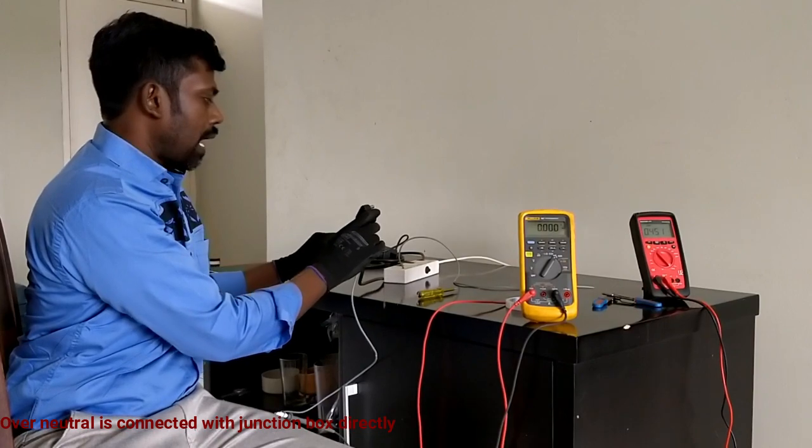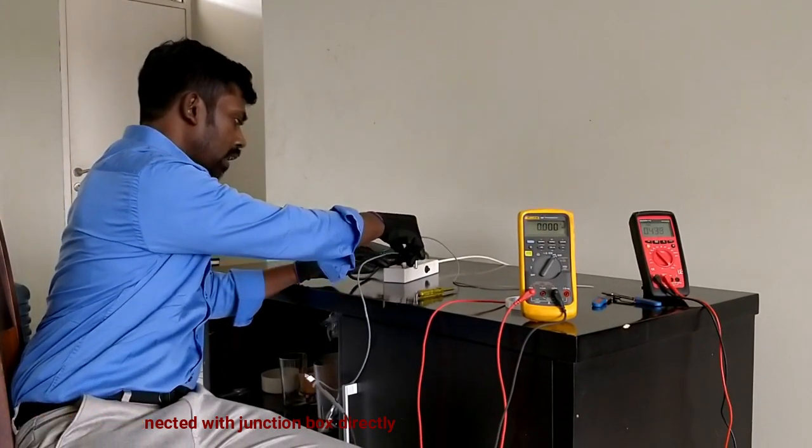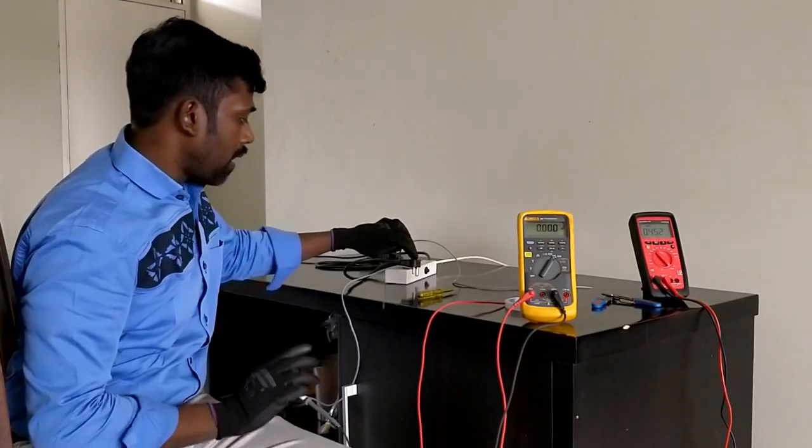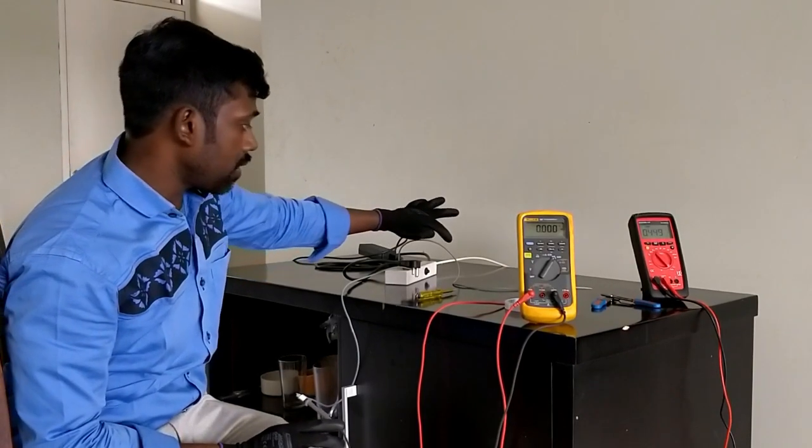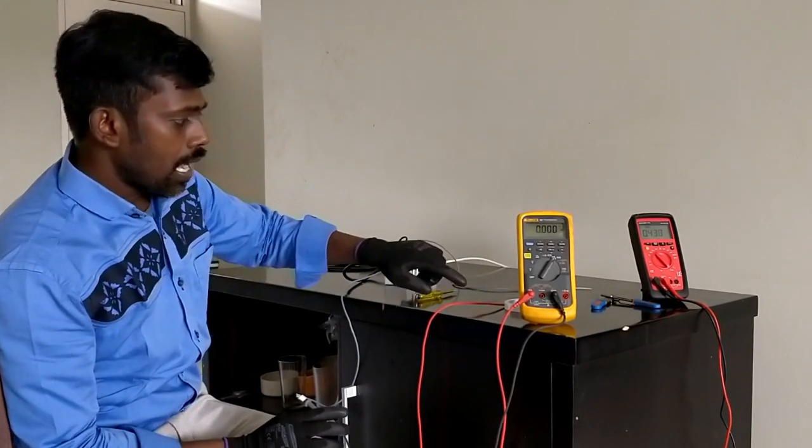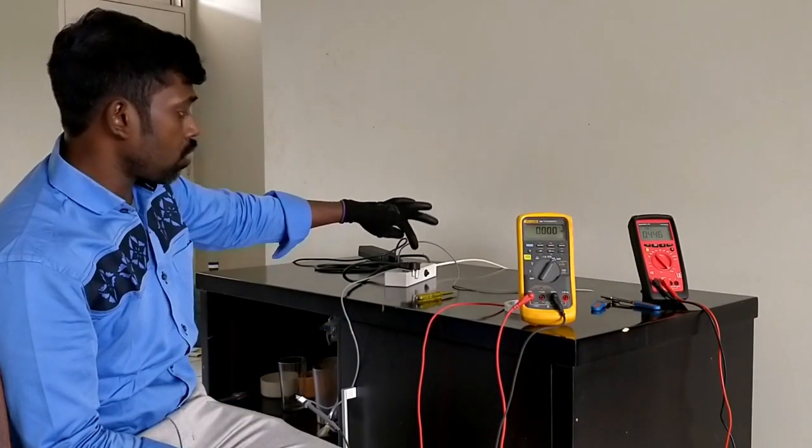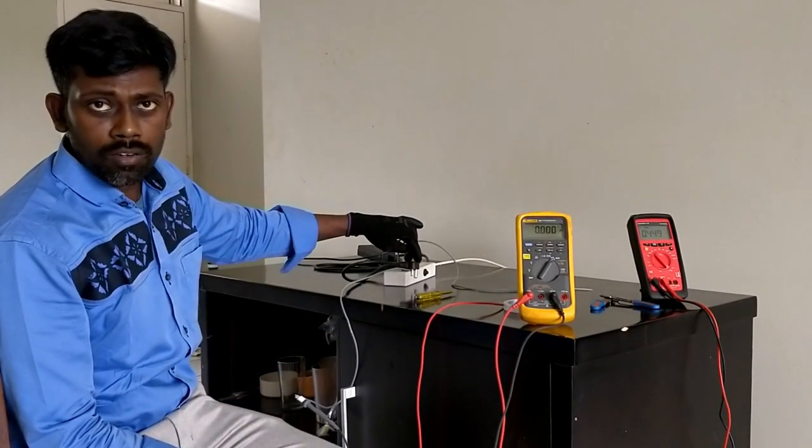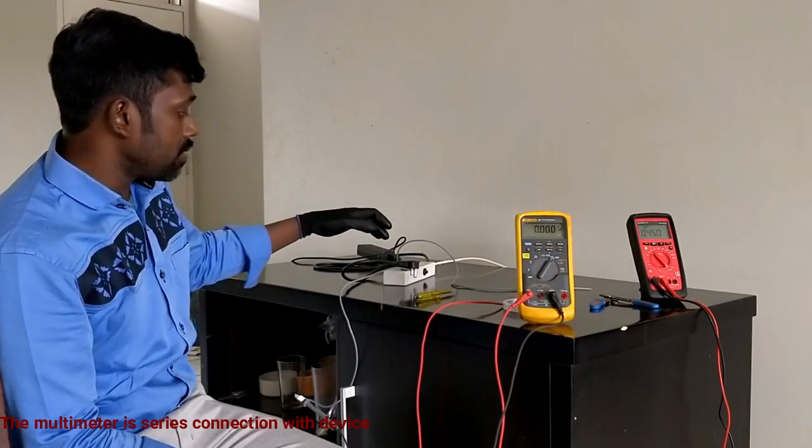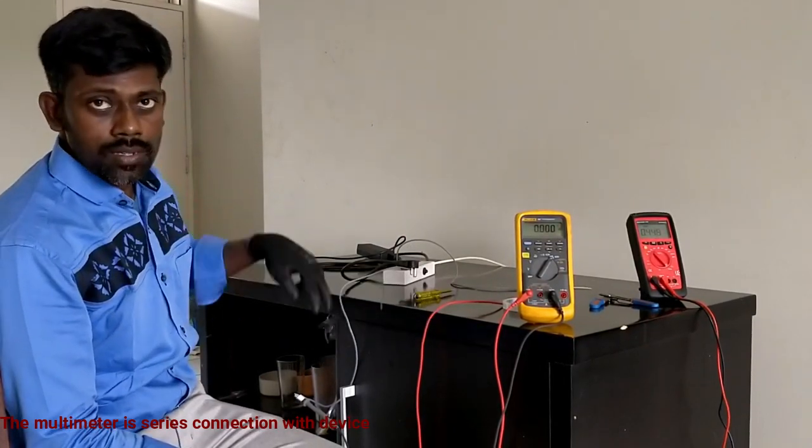Now the neutral I am going to connect over the neutral. Now my supply phase current comes through here and it gets connected through the other end of the probe to the adapter. So the adapter gets power supply and our current gets series connection by this line.